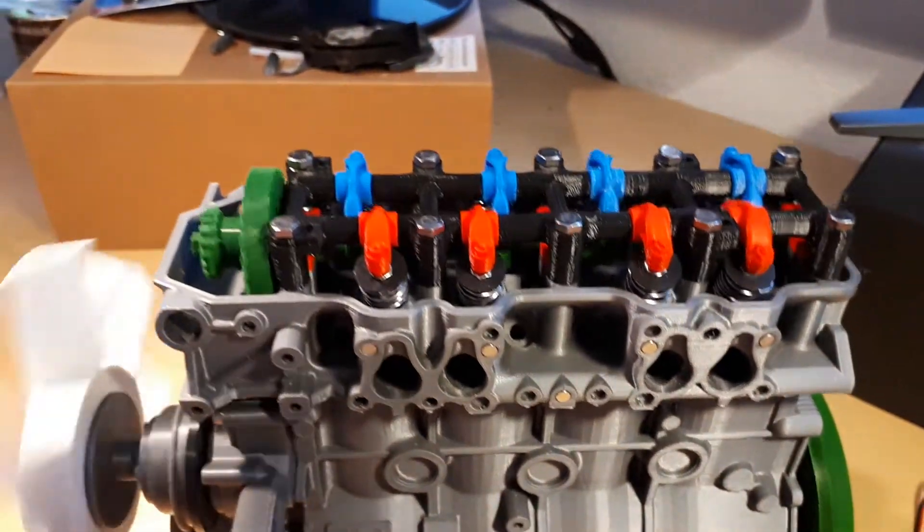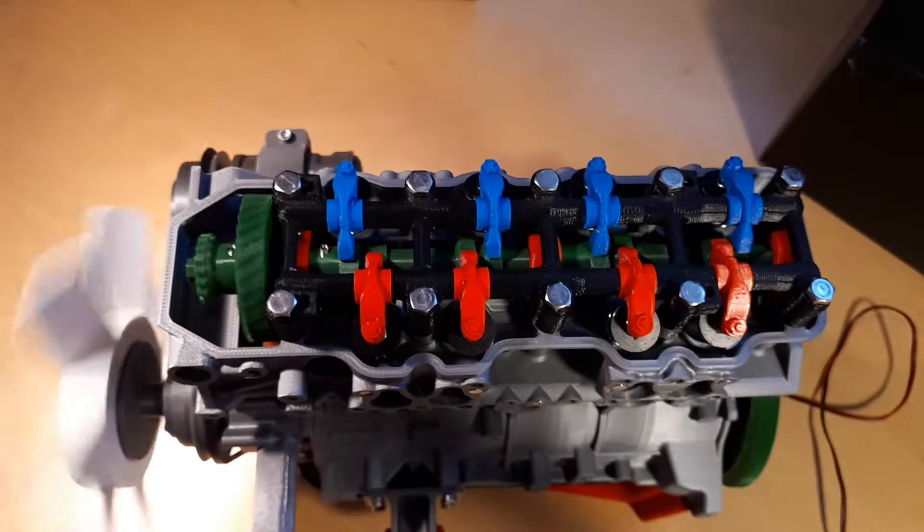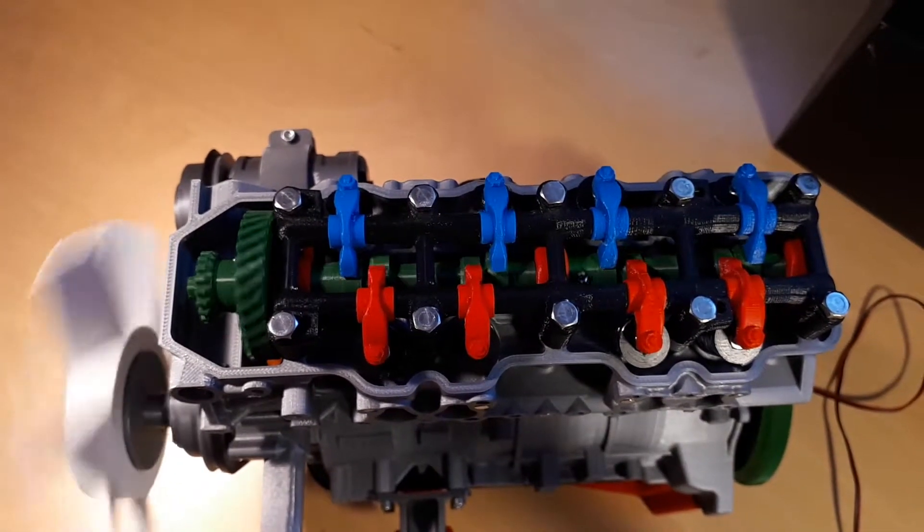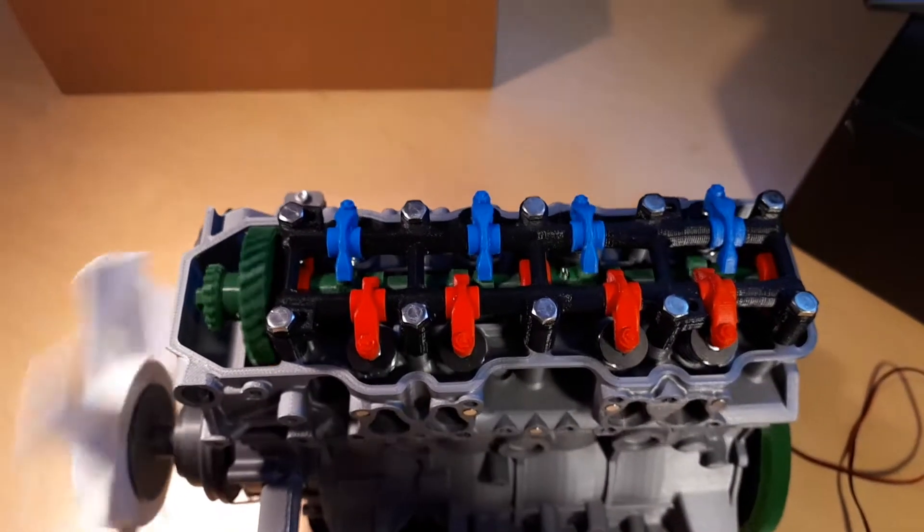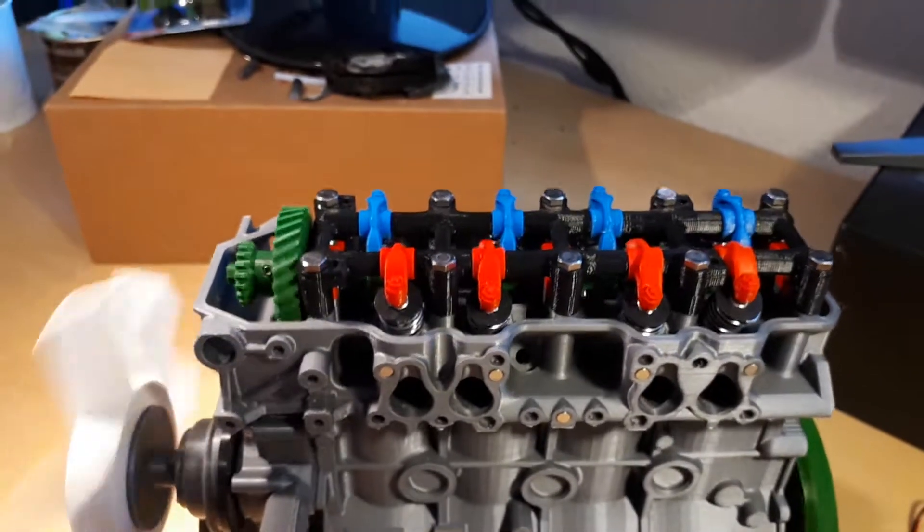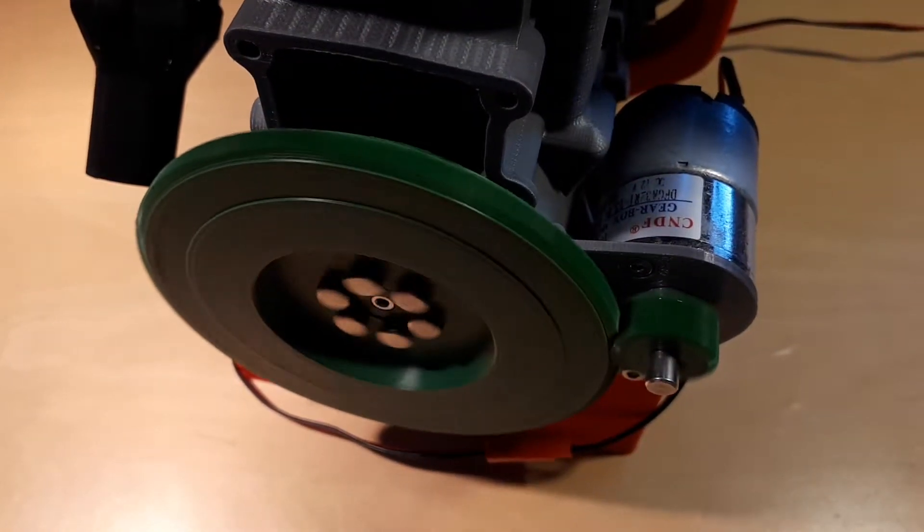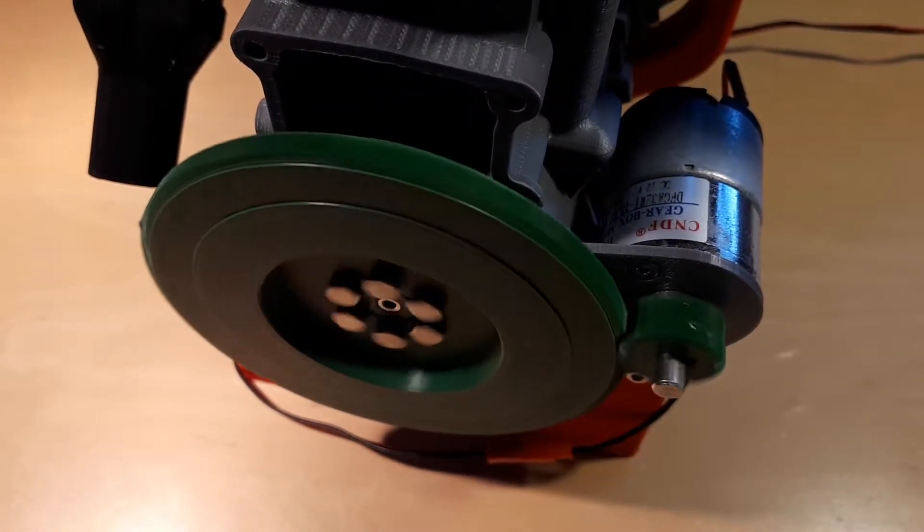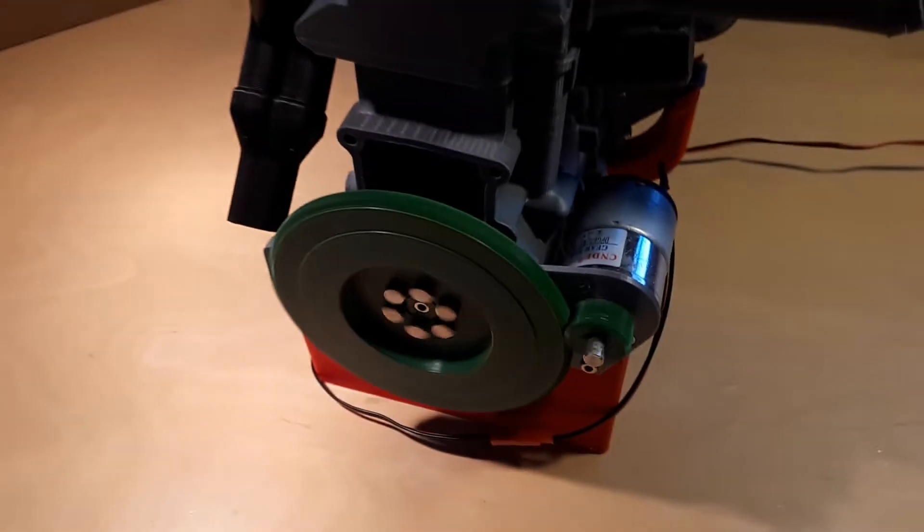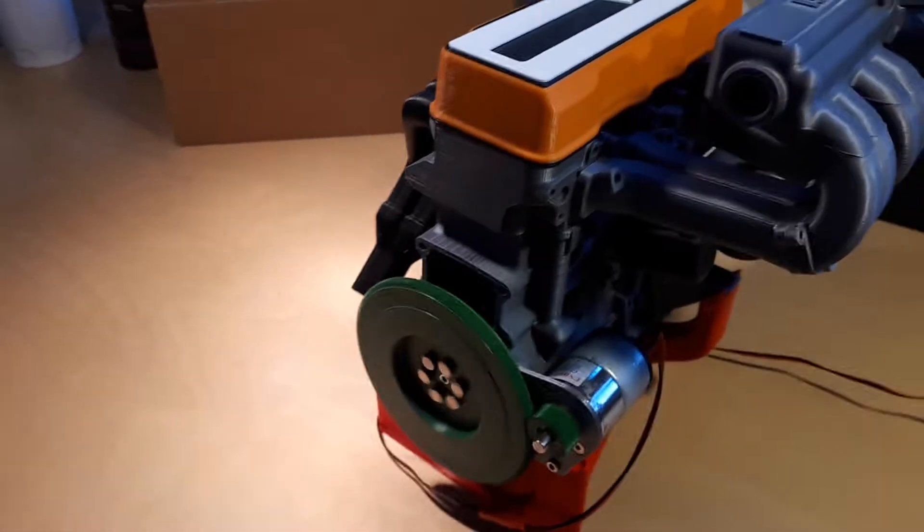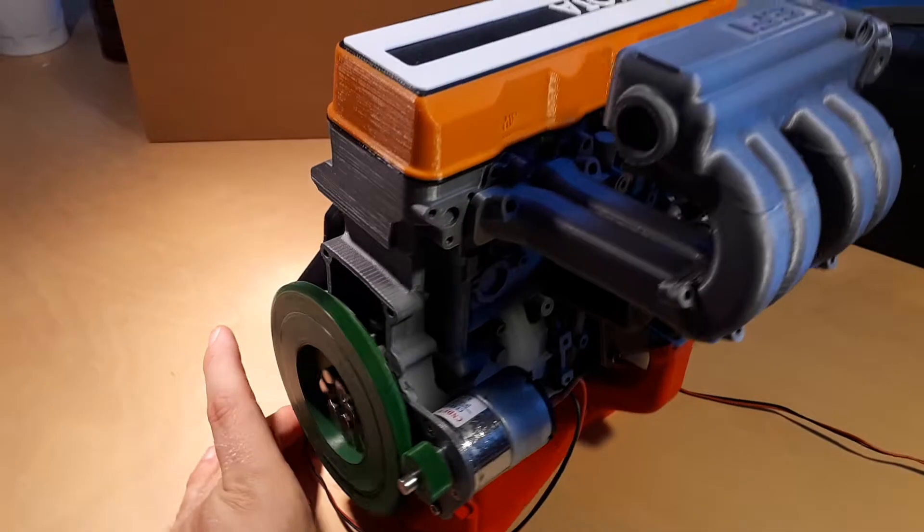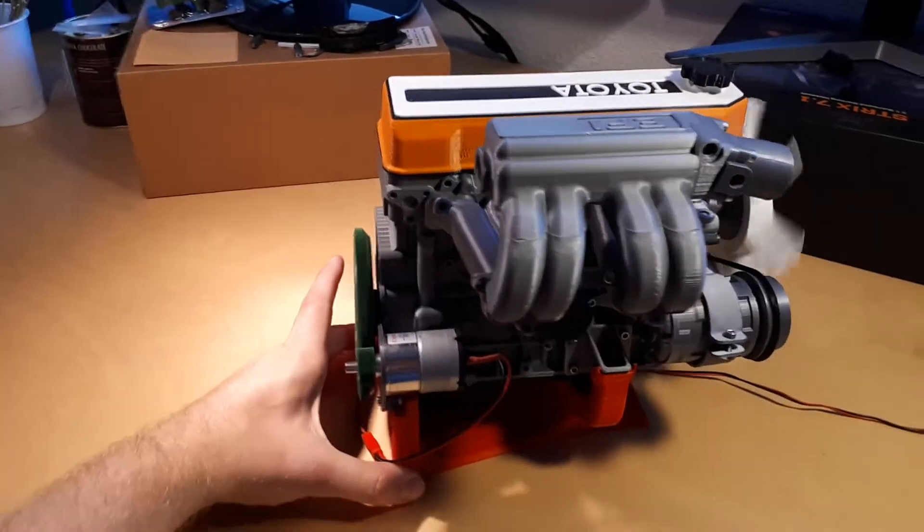Camshaft and valves can be difficult to assemble, but the Thingiverse group and instructions provided by Eric will help you if you experience any difficulties. The engine is powered by a 12V 500RPM geared DC motor through the flywheel. I prefer this solution over the initial 6V DC motor powering the shaft through the belt.